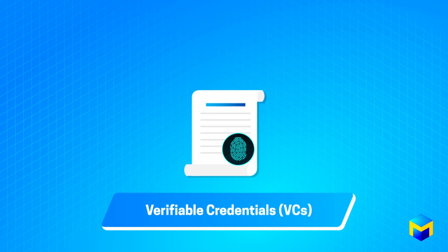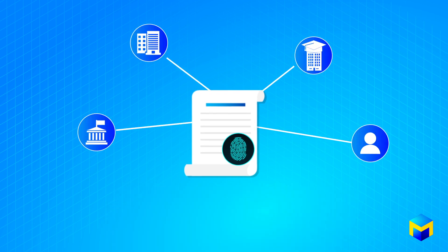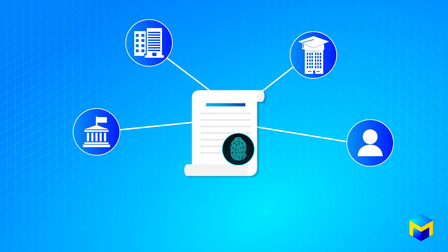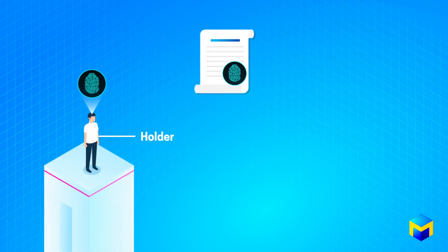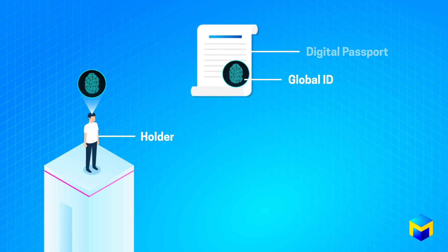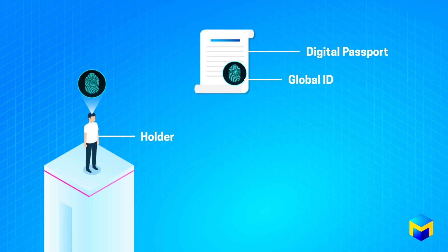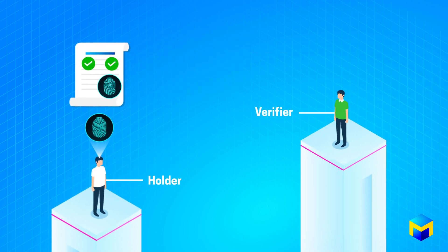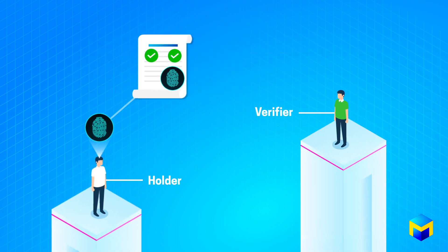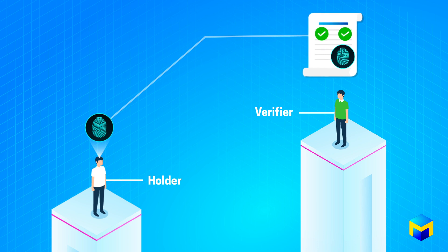VCs may be created by any entity in the decentralized ecosystem and issued to a holder of the VC. If we think of the DID as a global ID, then VCs are like digital passports or unique stamps, which serve to attest to specific information about an entity associated with a specific DID. During decentralized transactions, a VC holder presents their VC to another entity — the verifier — within the ecosystem.